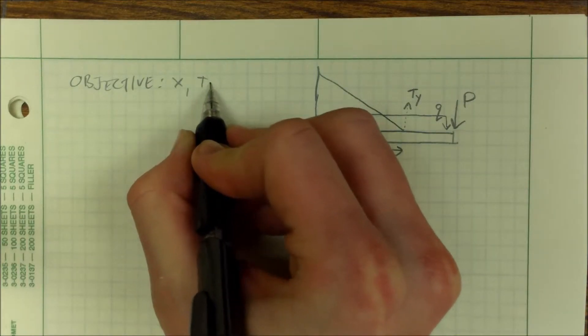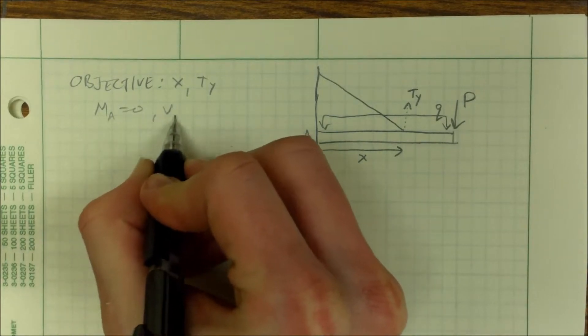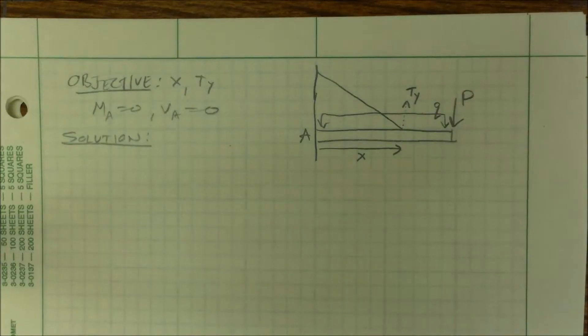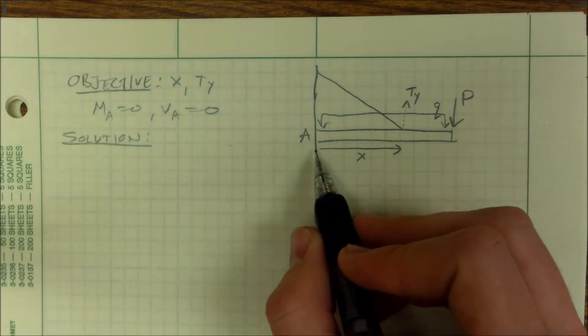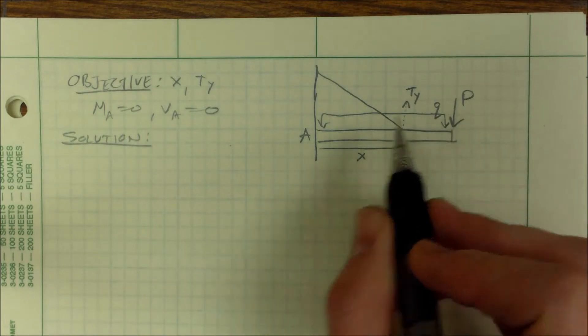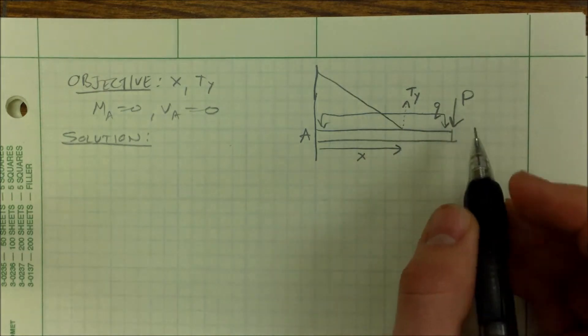X and TY when MA equals zero and VA equals zero. So first thing I've got to do, I have to find out what MA would be in terms of these three things, and VA would be in terms of these three things, all of the loadings.